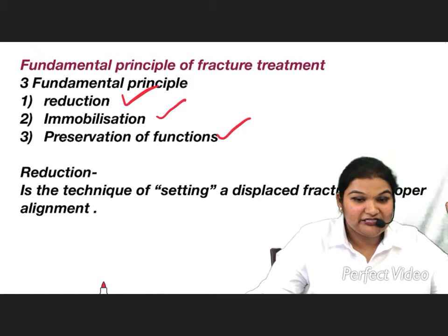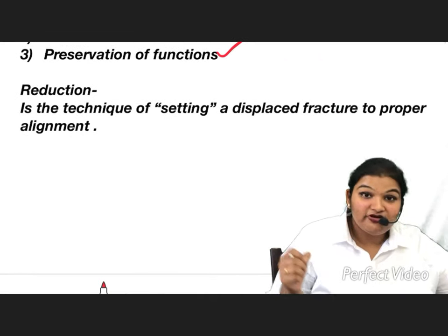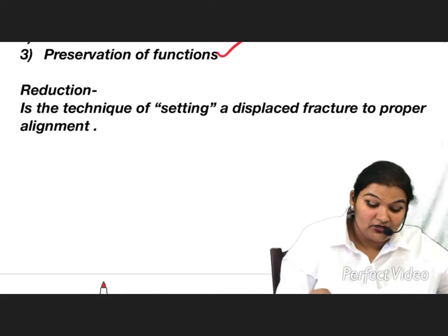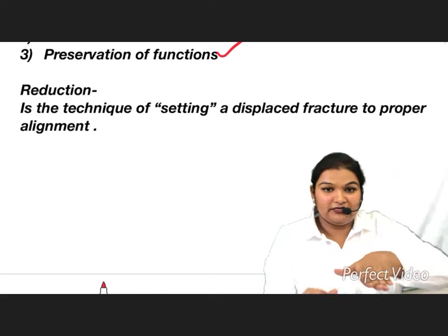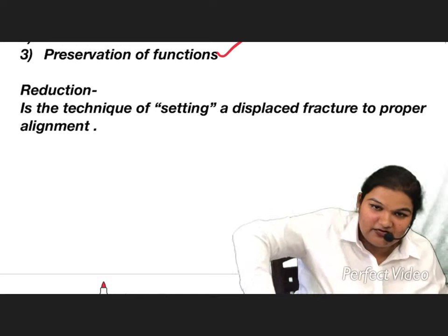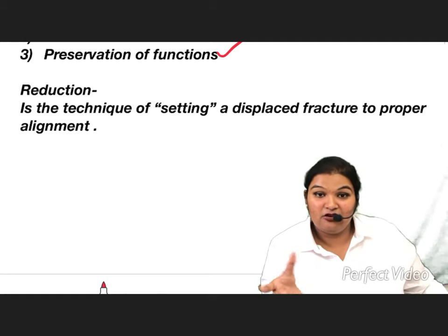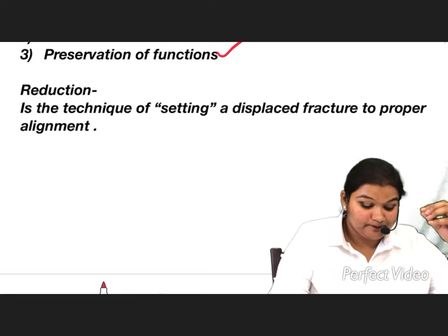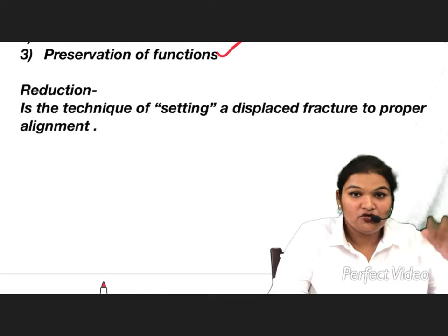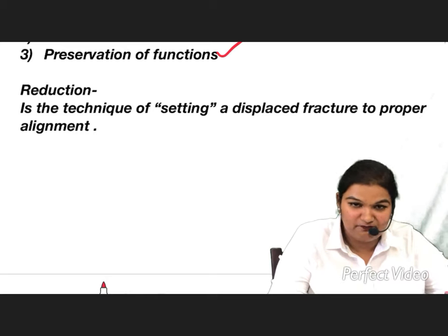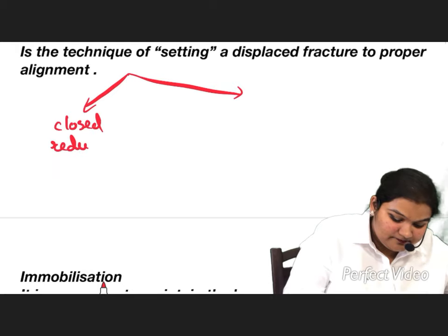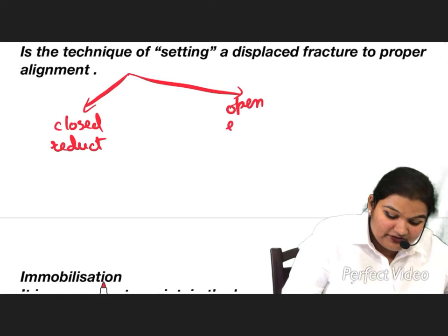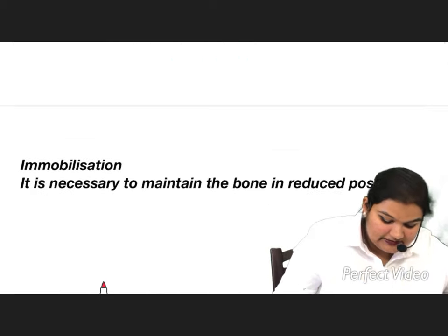Now let us look at the definitions in detail. Reduction is the technique of setting a displaced fracture in proper alignment — alignment in angle, plane, and cosmetic appearance. You can reduce a fracture either by opening it or in a closed condition. So there are two methods: closed reduction and open reduction.